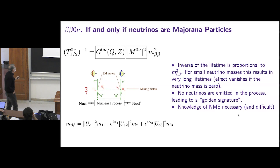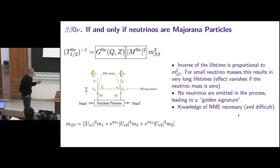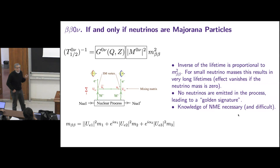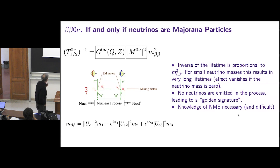The interesting thing I'm going to come back to again and again is these three terms. The inverse of the lifetime goes with something that looks innocent — phase space — then something nasty: nuclear matrix elements, squared. Please notice the square. The squares are all over the place, making our life very uncomfortable. And then the effective neutrino mass, again, squared.